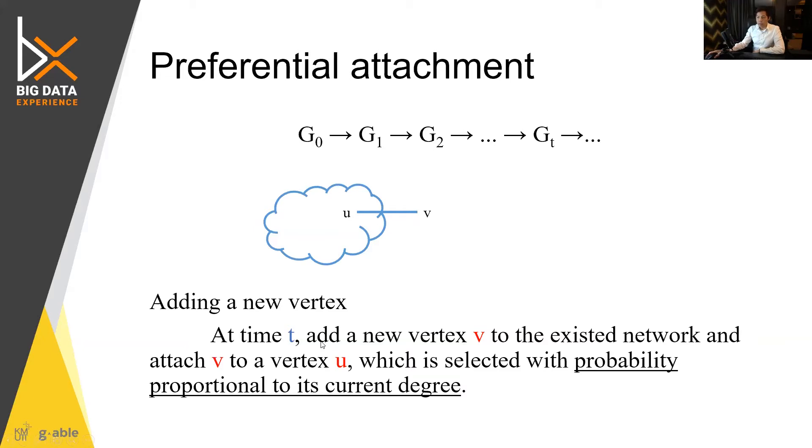at the time t, new vertex v would be attached to vertex u or some vertex in the network. Vertex u would be selected with probability proportional to its current degree.